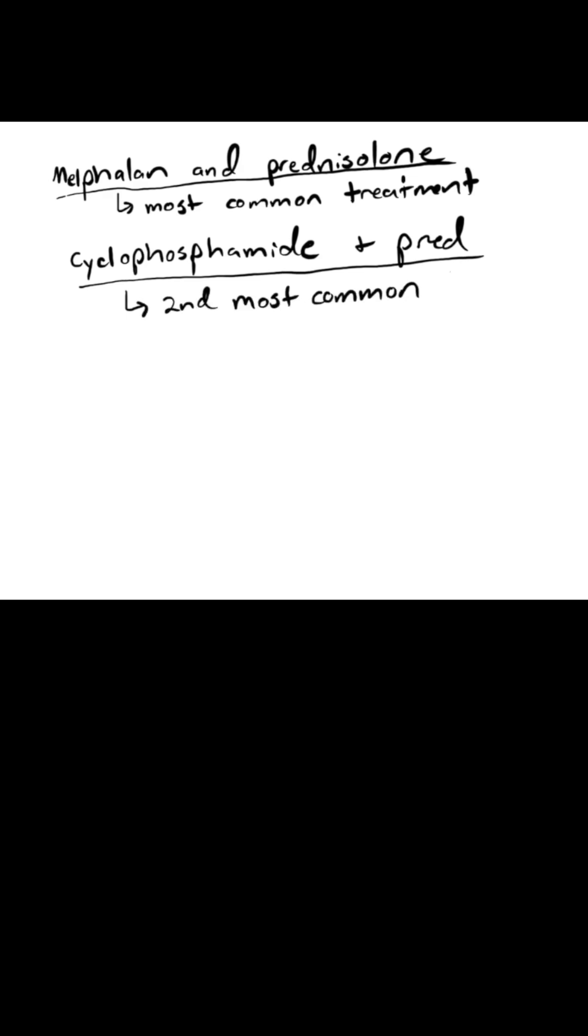The most common initial treatments involved melphalan and prednisolone, used in 19 cats, and cyclophosphamide and prednisolone, used in 10 cats. Other treatments included chlorambucil and prednisolone in 4 cats, prednisolone alone in 4 cats, and various other combinations in the remaining cats.